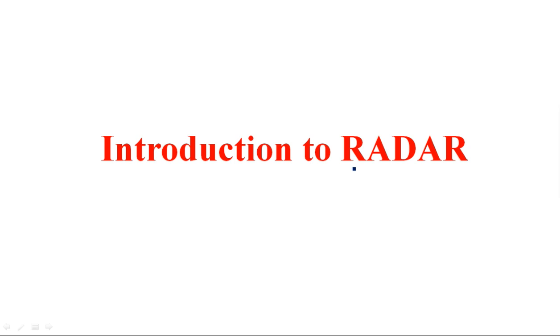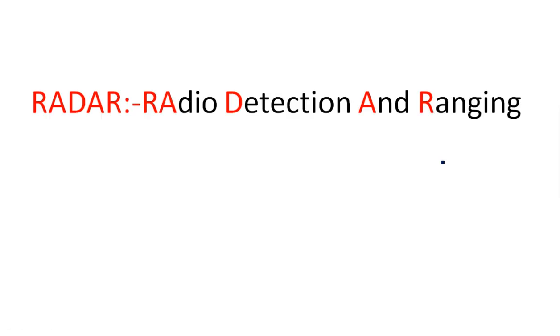In this video I am going to start the new subject: radar systems. Radar stands for Radio Detection And Ranging. RA stands for Radio, D for Detection, A means And, and R means Ranging. I will explain why this radar is called Radio Detection And Ranging.